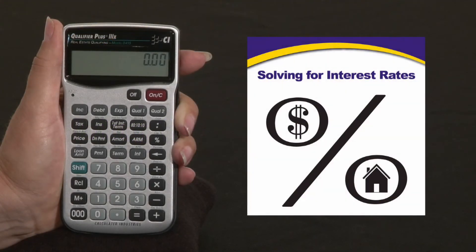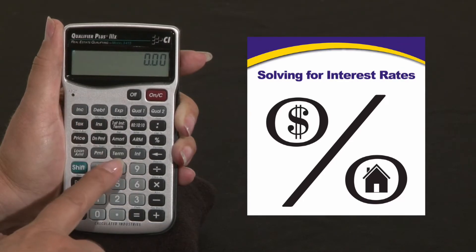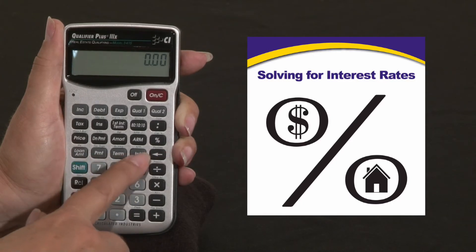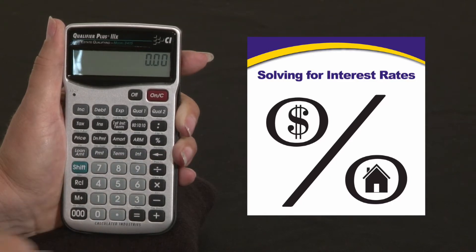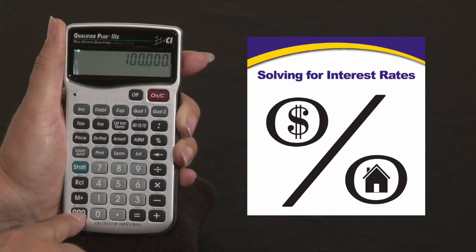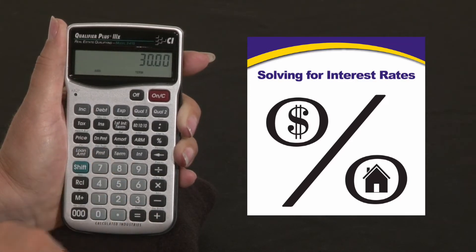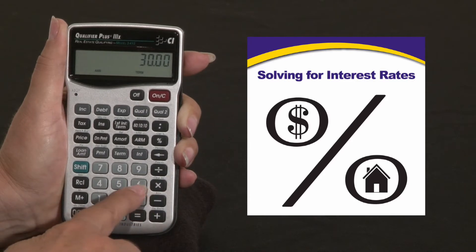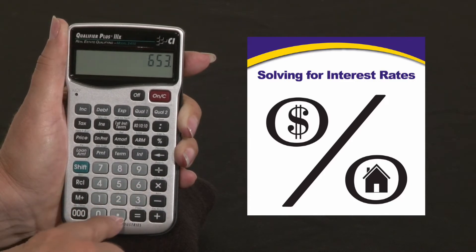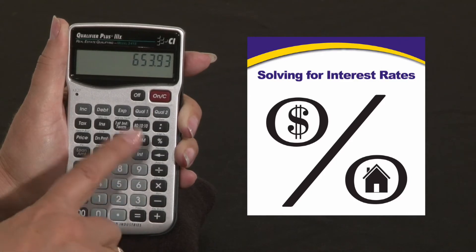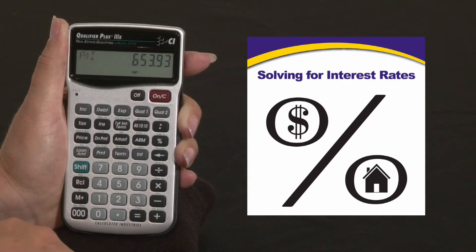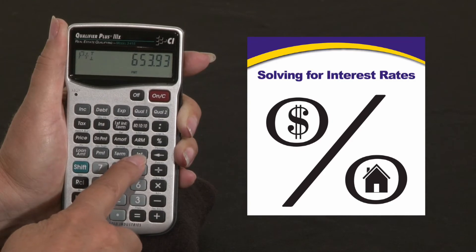With the Qualifier Plus 3X, our desk model, and the Qualifier Plus FX, you can enter a loan amount, you can enter a term, and you can enter a payment and be able to solve for interest. Today we're going to enter a $100,000 loan amount, give it a 30-year term, and all we know is their payment is $653.93. We're going to enter that as our payment and then calculate what the interest rate would be for a loan with that payment.